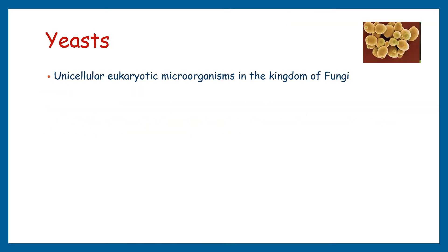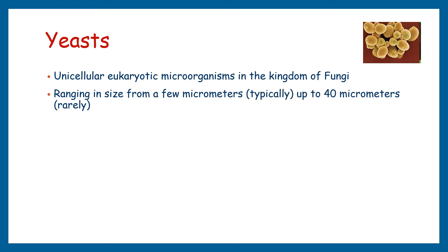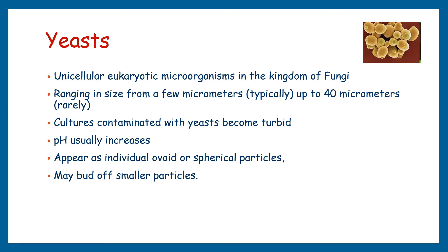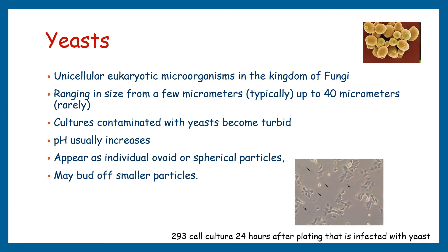Yeast are unicellular eukaryotic microorganisms in the kingdom of fungi, ranging in size from a few micrometers up to 40 micrometers. Like bacterial contamination, yeast-contaminated cultures also show turbidity in advanced stages. There is very little change in the pH of the contaminated culture; pH usually increases when the yeast contamination becomes heavy. When observed under a microscope, yeast appears as individual ovoid or spherical particles that may bud smaller particles. The image shows yeast-infected adherent T-93 cell culture.